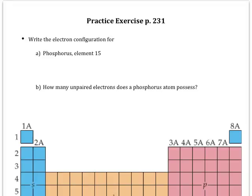This is a practice exercise from page 231 in the textbook. We're looking at writing electron configurations and then determining the number of unpaired electrons.